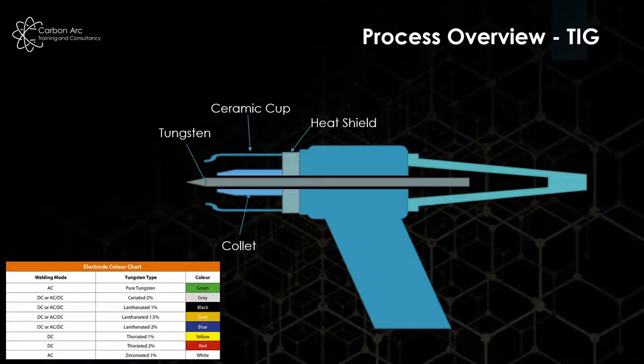We have a heat shield which helps protect the rest of the torch from the transfer of heat through the system. Our torch body, and at the back we have a tail or a back cap which can come in a few different sizes. We're showing a longer one here, but to get into smaller areas it can be a stub end piece where you cut your tungsten down to fit.